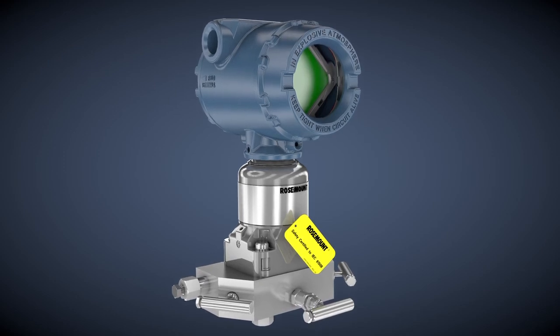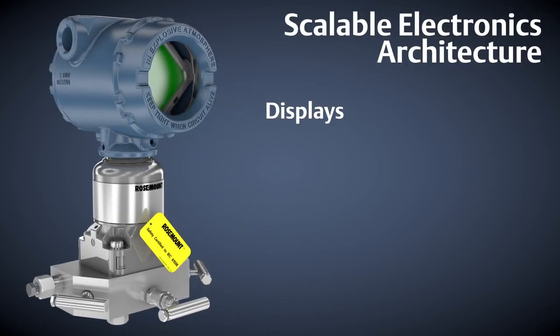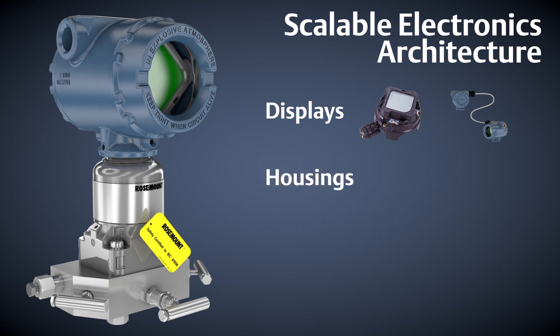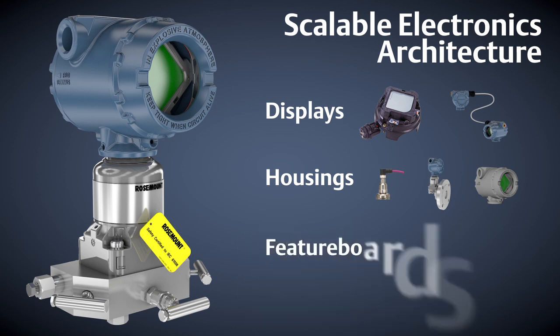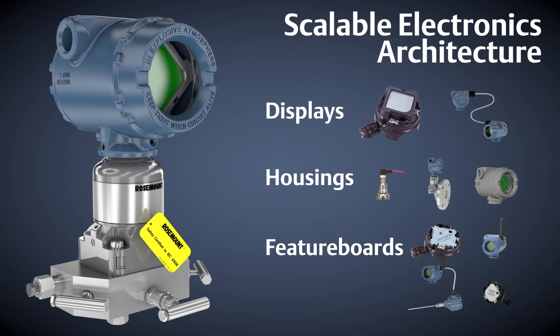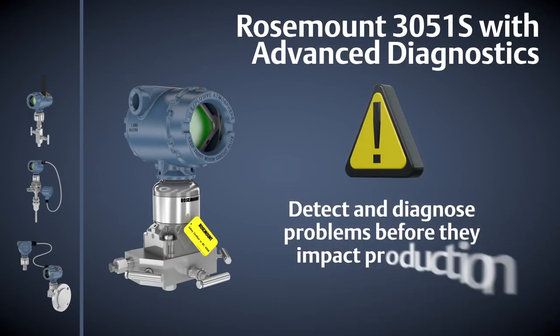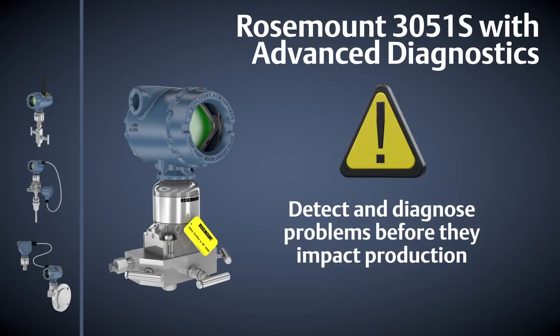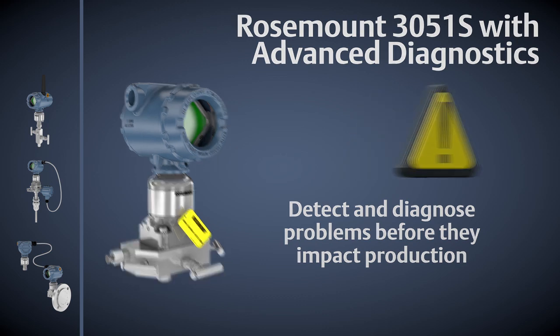What truly transforms the Rosemount 3051S from being more than just a pressure transmitter is a scalable electronics architecture that includes local and remote displays for improved ease of access, a variety of housings including lightweight and dual compartment options, and electronic feature boards that add unique capabilities, allowing you to predict abnormal situations before they impact production and eliminate unnecessary maintenance routines with advanced diagnostics technology.